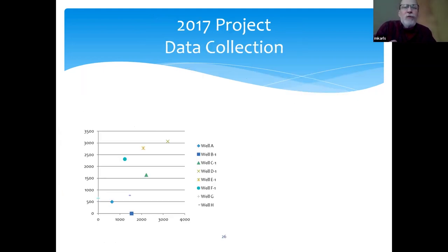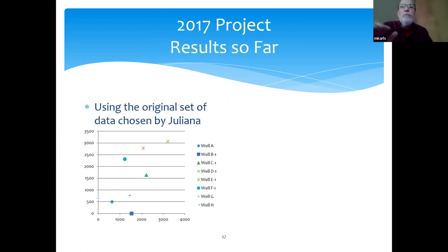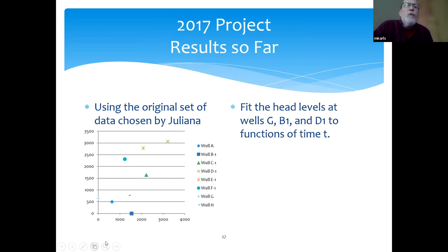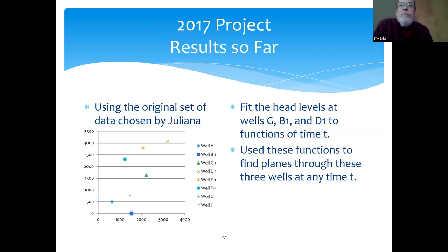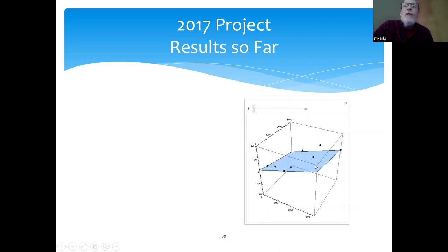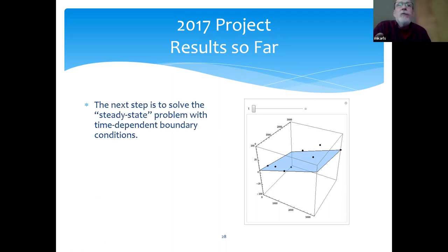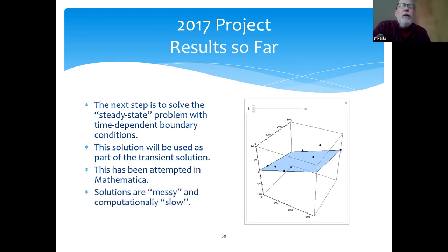I needed some data for this project, so I used the original set of data chosen by Juliana. I fit the head levels at wells on the outermost wells. So what I did is I fit the head levels to functions. I actually looked at planes for each time t going through those points, and then I created time-dependent boundary conditions. Here's a picture at some instant in time. I just ran a plane through each of those three head levels at the three boundary wells. The next step is to solve the steady state problem with time-dependent boundary conditions. This solution will be used as a part of the transient solution. I tried this in Mathematica and discovered solutions are messy and computationally slow, and then I pretty much stopped because I wasn't sure what to do at that point.